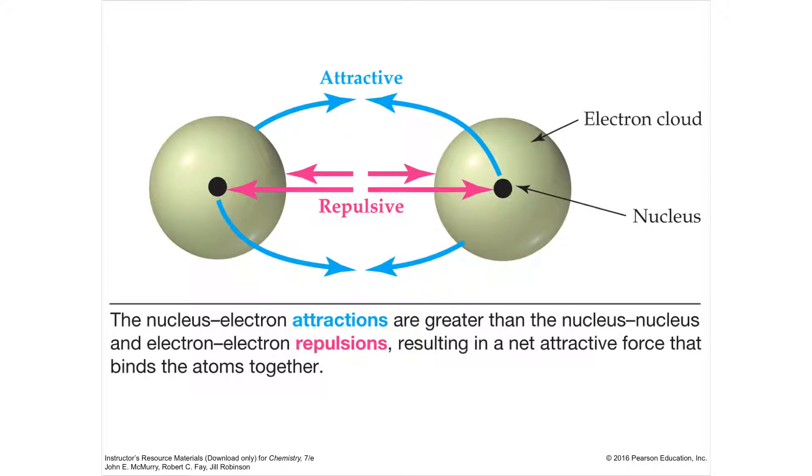Section 8.3, covalent bonding. If two elements are going to form a bond, they've got to overcome a lot of problems. You've got negatives here in the electron cloud, and there's electrons here, and these electrons are going to repel each other. Likewise, you're going to have positive charges in the nucleus, and these positive charges are going to repel each other as well. So if they are going to make a bond...